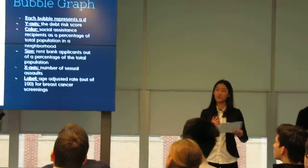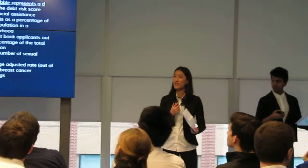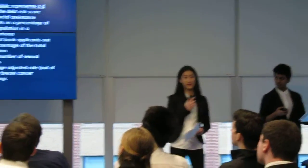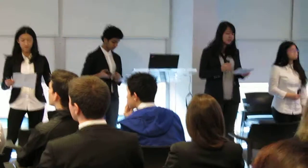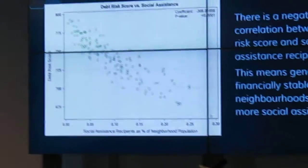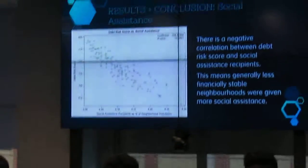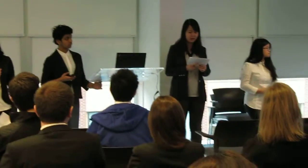We created different scatter plots for each of our variables to show correlations more clearly. This scatter plot shows the relationship between recipients of social assistance as a percentage of the neighborhood population versus the debt risk score. As you can see, there is a negative correlation. These recipients qualified for Ontario Works Temporary Care, Ontario Disability Support Program, or Special Assistance. It can be concluded that neighborhoods with more social assistance recipients have lower debt risk scores, reflecting their financial health, as these individuals rely on assistance and are at higher risk of not being able to repay loans.